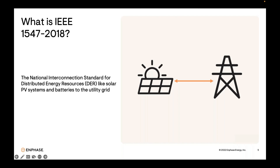IEEE stands for the Institute of Electrical and Electronics Engineers. IEEE 1547 is the national interconnection standard for connecting distributed energy resources — like solar panels, inverters, and batteries — to the utility grid. IEEE 1547-2018 is the second revision and contains the underlying requirements for interconnection. It also relies on companion standards for testing and certification, such as UL 1741.